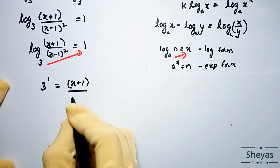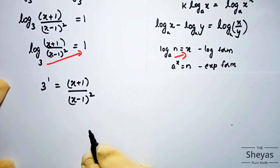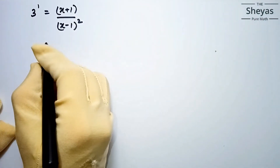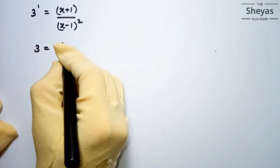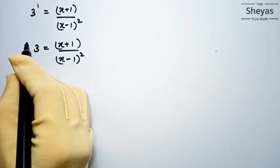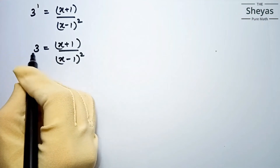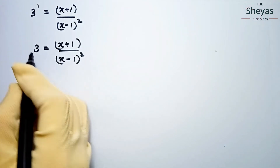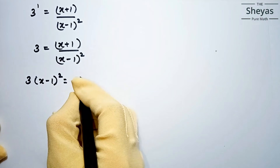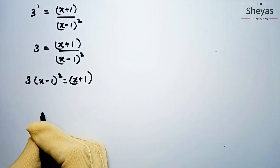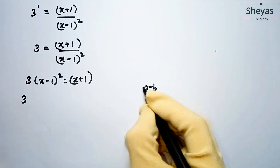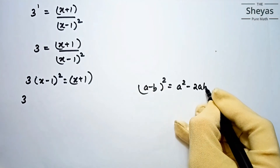Since 3^1 = 3, we have 3 = (x+1)/(x-1)². We can cross-multiply to get 3(x-1)² = x+1. Now we expand 3(x-1)² using the formula (a - b)² = a² - 2ab + b², giving 3(x² - 2x + 1) = x + 1.